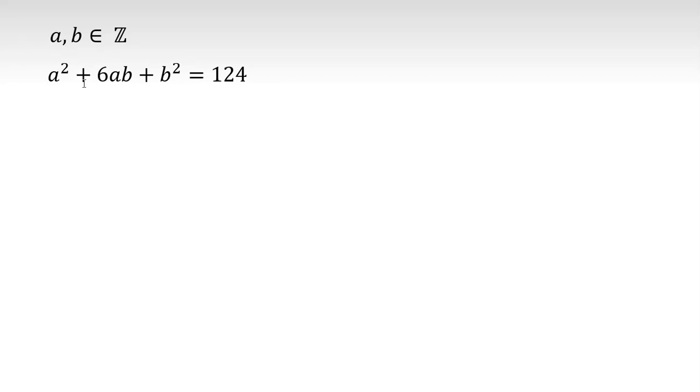a and b are integers, a squared plus 6ab plus b squared equals 124, and we want to find a and b.